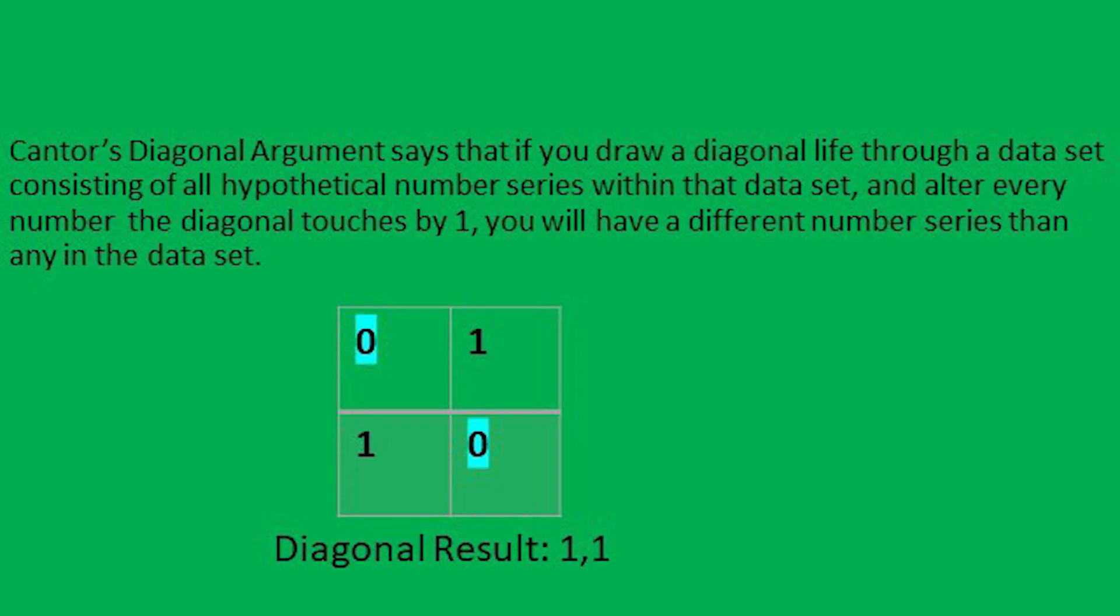The general gist of my disproof of Cantor's diagonal argument is that his argument assumes a complete dataset would be a perfect square. This is because the diagonal must be able to travel every bit as far to the right as it can travel down, to touch every number series in a dataset. If a dataset was, oh say, taller than it is wide, then the diagonal would run out of room traveling right before it could finish traveling down. This means if I can prove a complete dataset would be a rectangle with one side larger than another, I would have effectively disproved Cantor's diagonal argument.